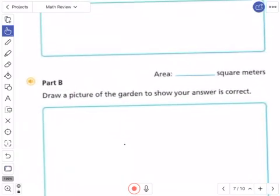Then B, draw a picture of the garden to show your answer is correct. Because you have to then find what is the area of everything all together. So then just draw a picture of it and just kind of show your work. All right, come back and check your answers here.